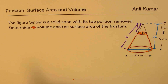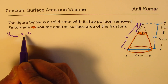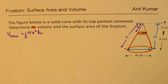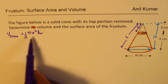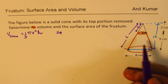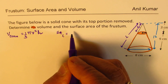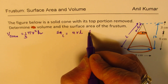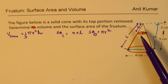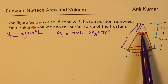Let us recall the formulas. Volume of a cone is one-third of pi r squared h — one-third of that of a cylinder. Surface area of a cone can be split into lateral surface area, which is pi r L, and the area of the circle(s), which is pi r squared. A full cone has one circle at the base, but a frustum will have two circles.